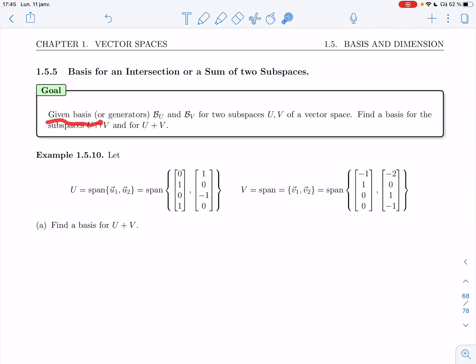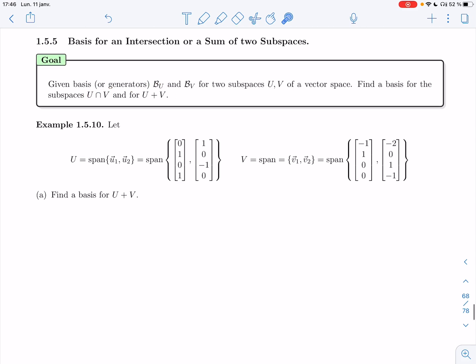Given basis B1 and BV for two subspaces U, V of a vector space, I want to figure out how to find a basis for the subspace U intersection V and for U plus V. So let's try an example and then we'll come up with a method.